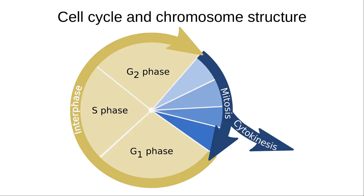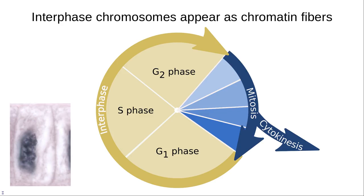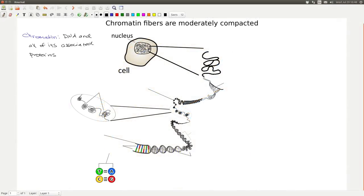In interphase, cells grow, replicate their DNA, and prepare to divide. Interphase is shown by the pie pieces with a goldish color. Mitosis is the division of the nuclear content of the cell, which includes the DNA. Mitosis is further broken down into several steps based on the processes occurring in the cell. At the end of mitosis, cytokinesis typically occurs and is the division of the cytoplasm into two cells. In non-dividing cells and cells in interphase, the chromosomes appear as long thin fibers — you can't make out individual chromosomes under the microscope.